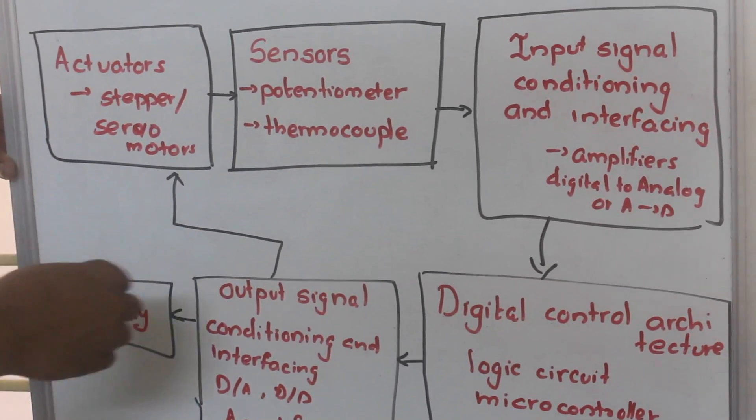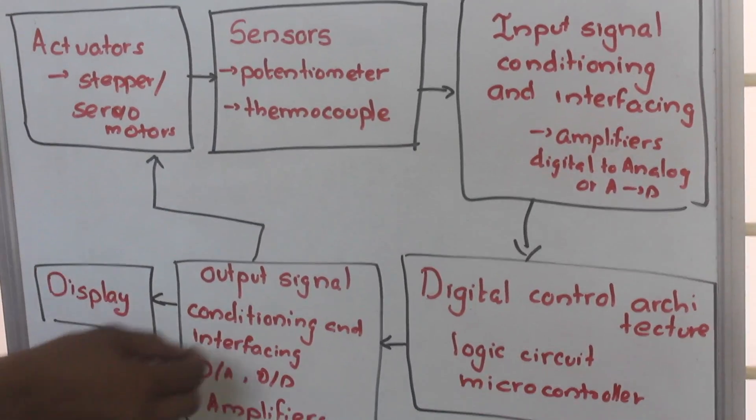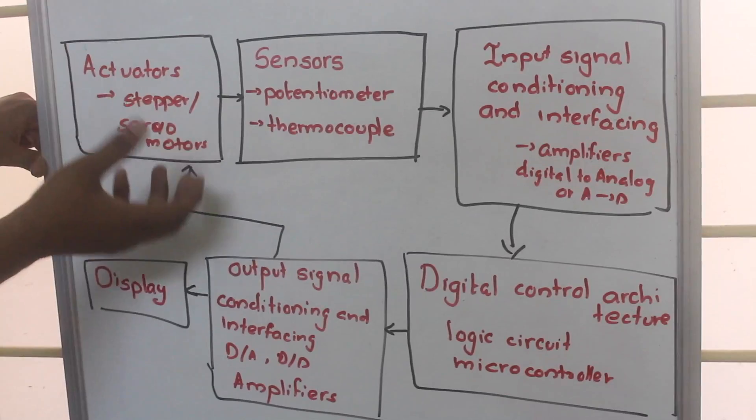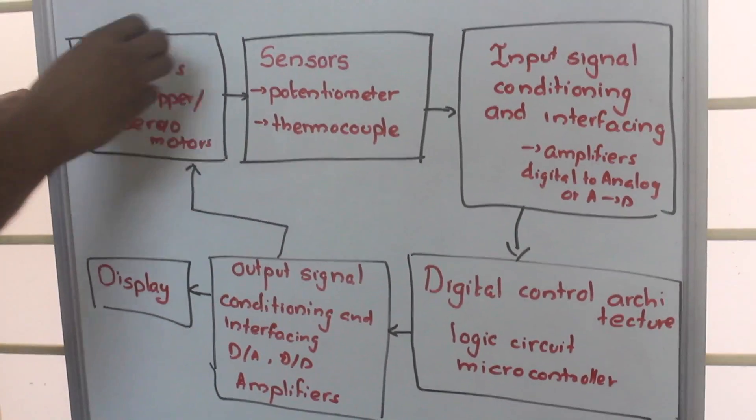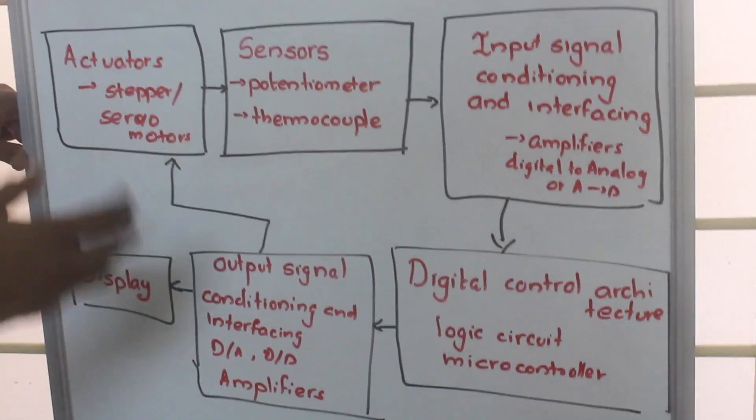In the display unit, suppose if we are to measure the temperature, this display unit will show us the temperature. In the actuator unit there will be some refrigeration part which will do the refrigeration process to create the necessary temperature.